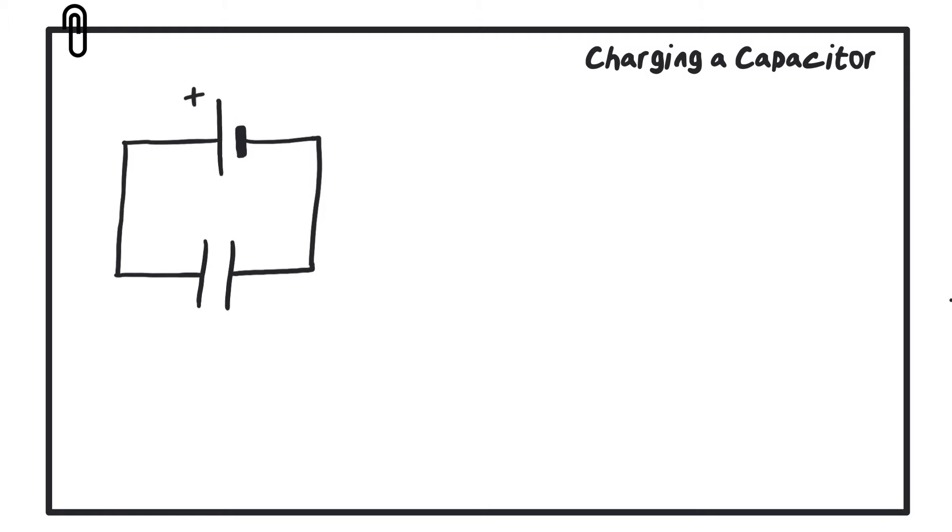In order to understand how the capacitor charges, we need to think about the movement of the electrons. If we consider the electrons that are just to the right of the cell, in other words to the right of the negative side of the cell, just at this point here, well since the electrons are negatively charged and they are beside the negative terminal of the cell, then they will repel each other.